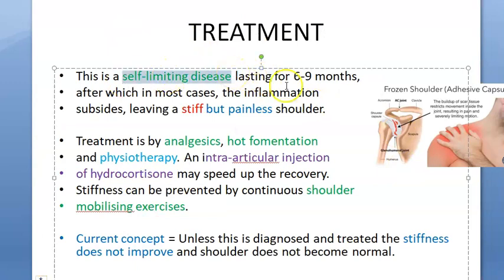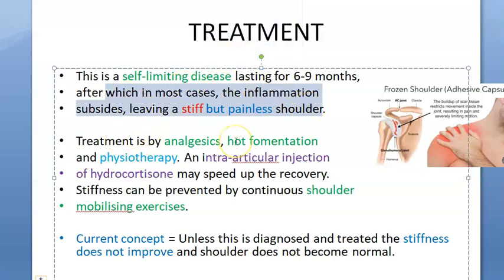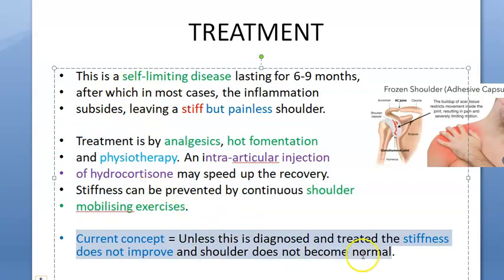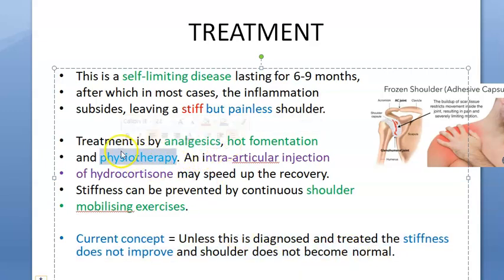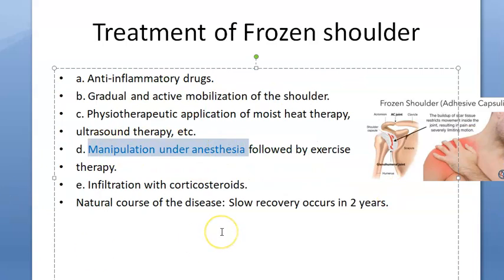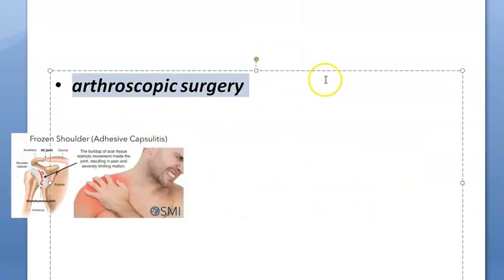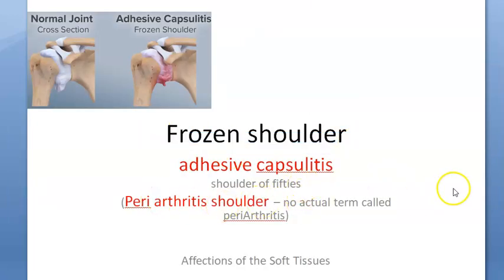Treatment recap: It is a self-limiting disease - pain will likely go, stiffness may remain, but with the natural course of two years and proper mobilization, even stiffness can resolve. However, the current concept says stiffness may not improve without treatment. Treatment includes analgesics, hot fermentation, physiotherapy, intra-articular injection of hydrocortisone, shoulder mobilizing exercises, manipulation under anesthesia, and arthroscopic surgery. That's it about frozen shoulder, adhesive capsulitis, or periarthritis shoulder.